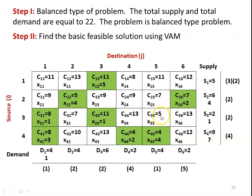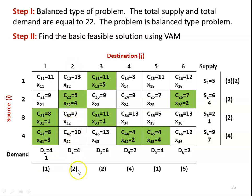For the third row, the lowest value is 7 and the difference is 2. For the fourth row, the lowest value is 4, the next lowest is 8, and the difference is 4. For the first column, the lowest value is 8, the next lowest is 9, and the difference is 1. For the second column, the lowest is 5 and the next is 7, giving a difference of 2. For the third column, the lowest is 9 and the next lowest is 11, giving a difference of 2. For the fourth column, the lowest is 4 and the next lowest is 8, giving a difference of 4. For the fifth column, the lowest is 4 and the next lowest is 5, giving a difference of 1.